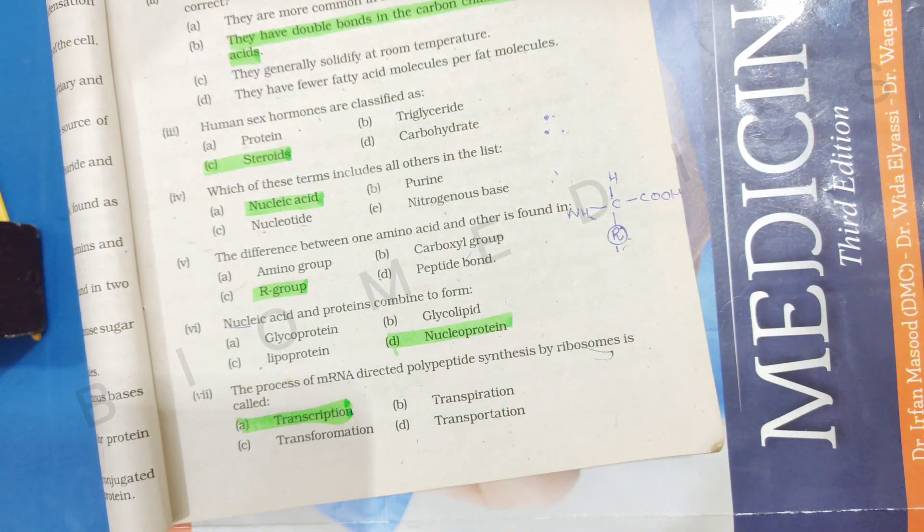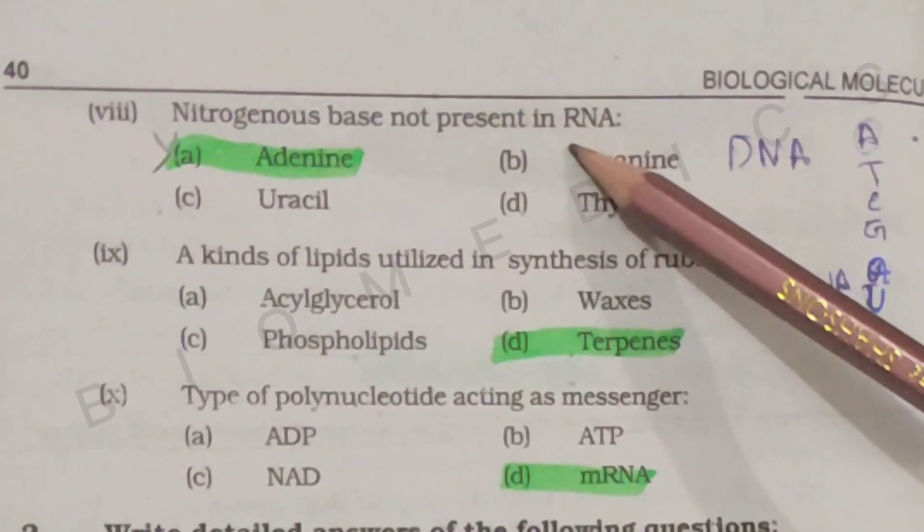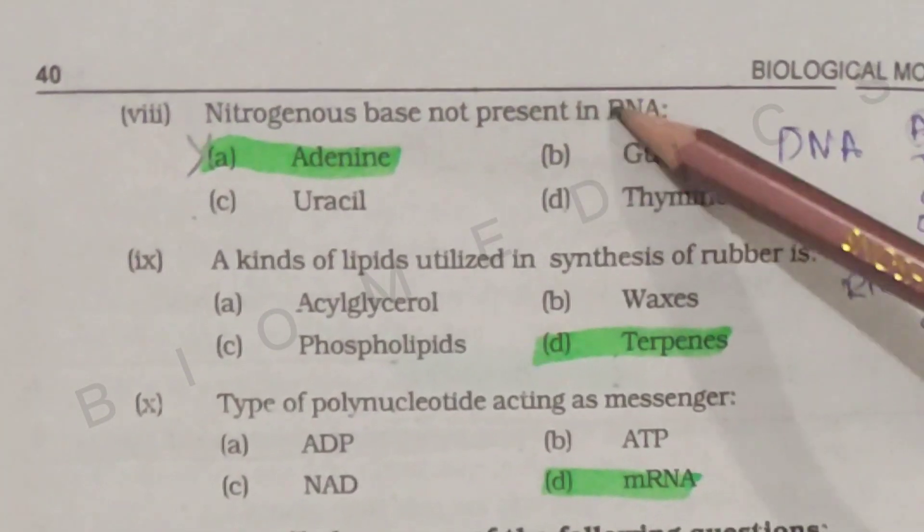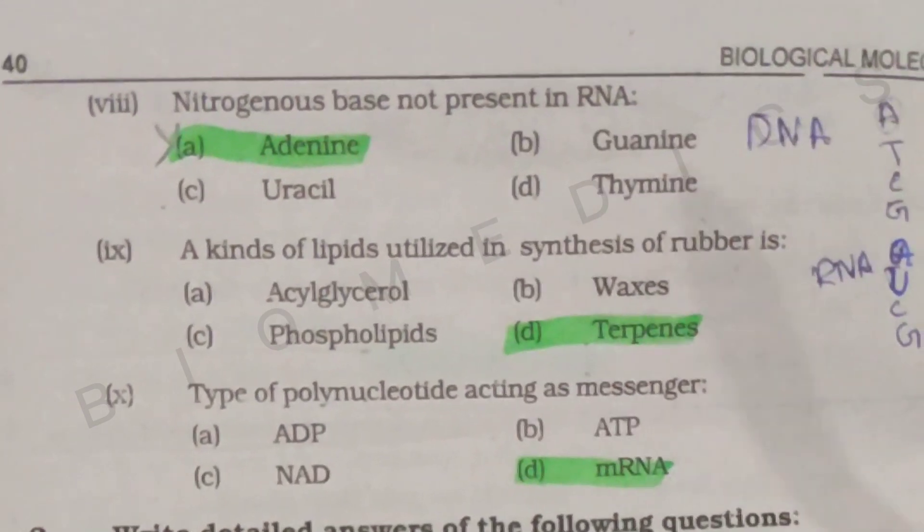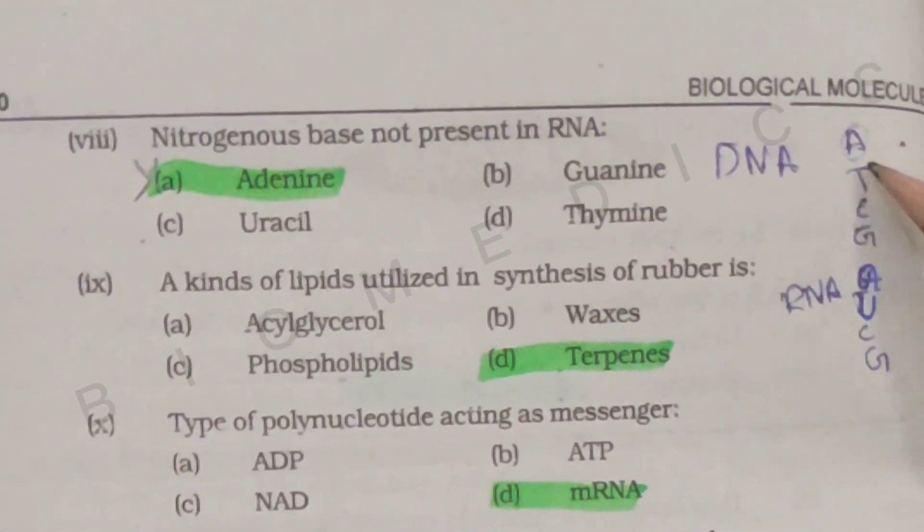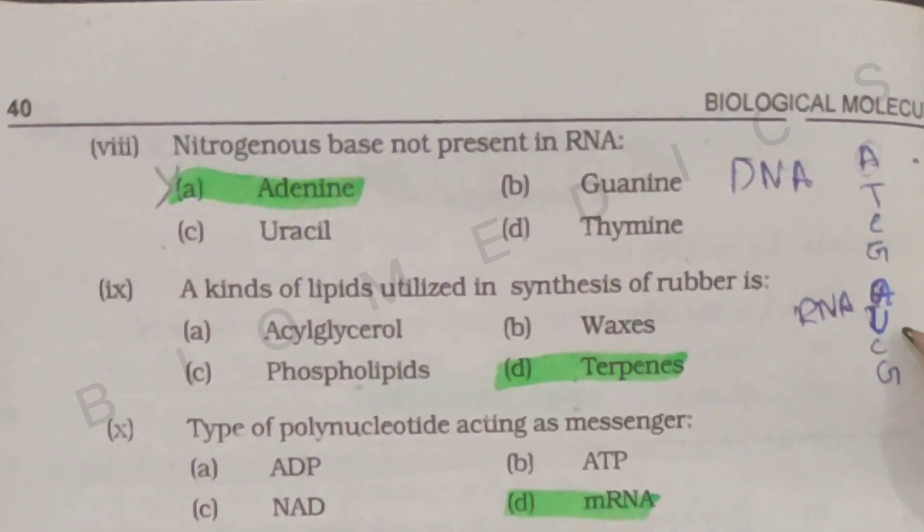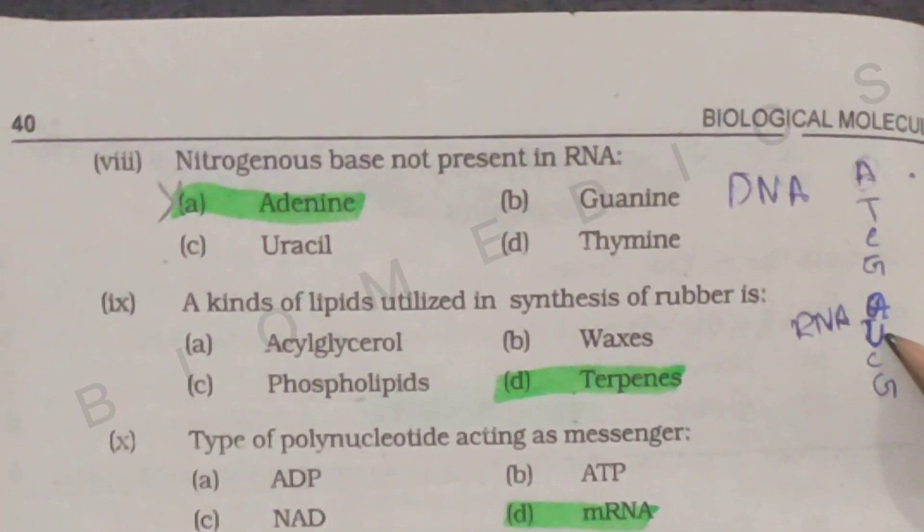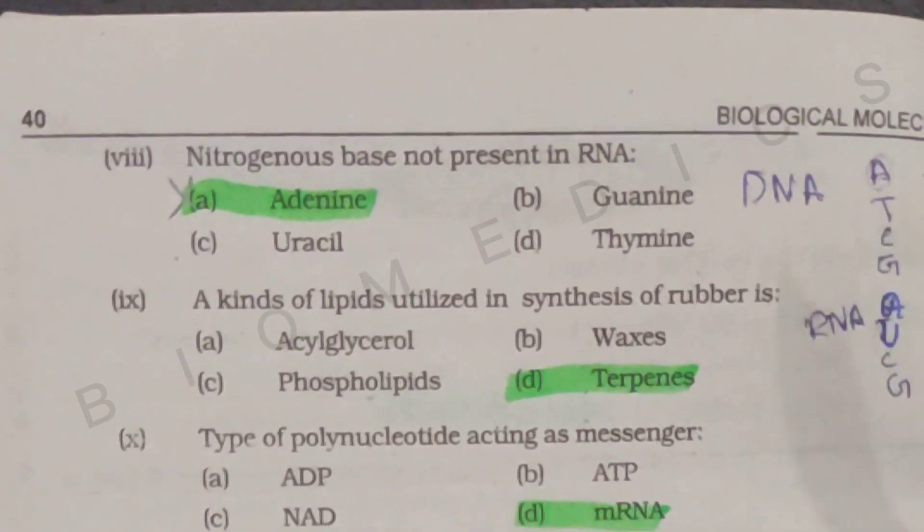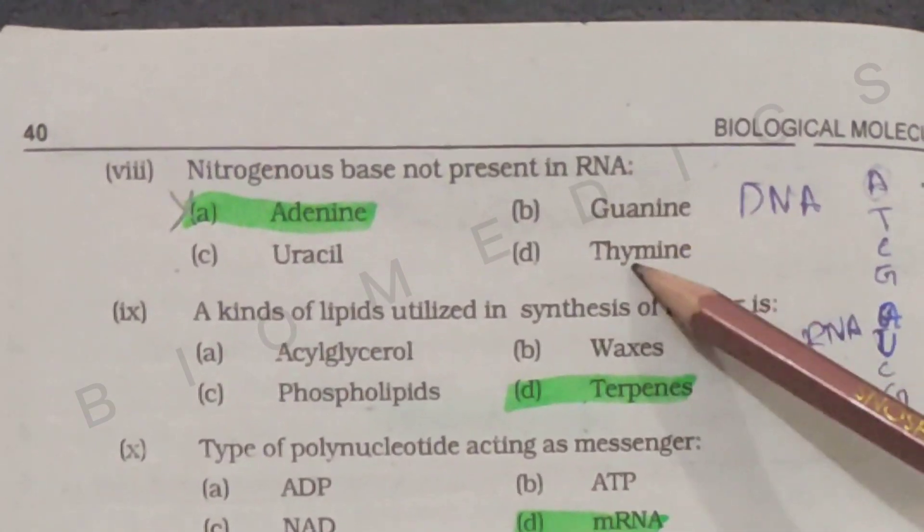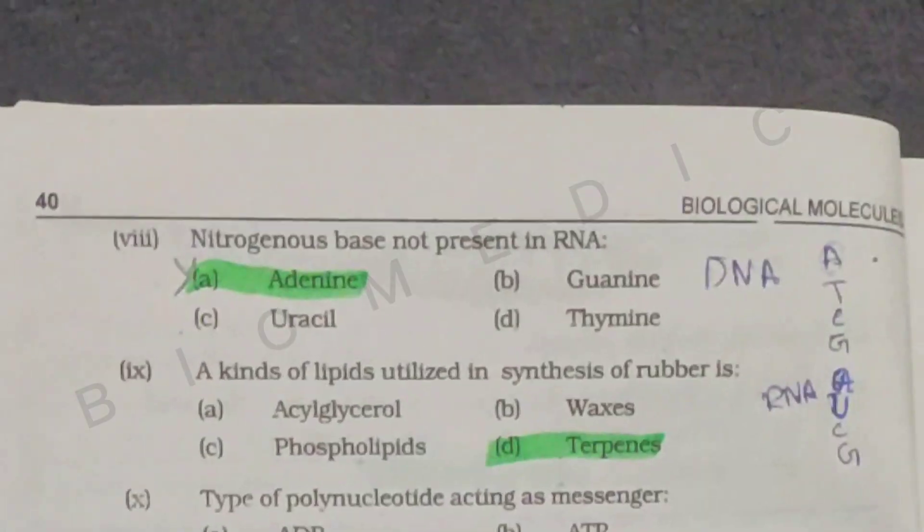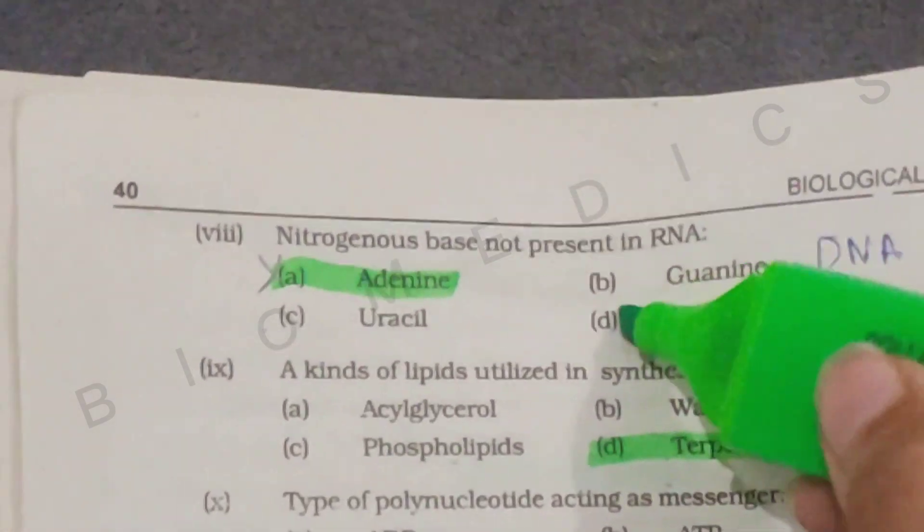The next question is: which nitrogenous base is not present in RNA? It is not available in RNA. You have adenine, thymine, cytosine, and guanine. There is a difference between DNA and RNA in thymine. It means that in RNA, thymine is not present. It is not in RNA, but uracil is. So the answer will be thymine.